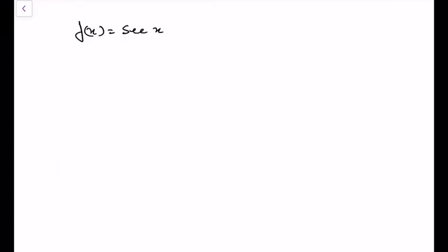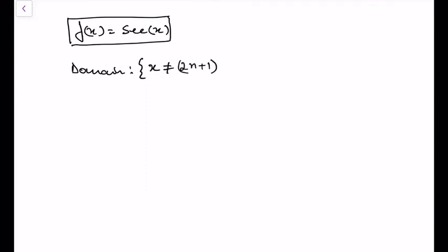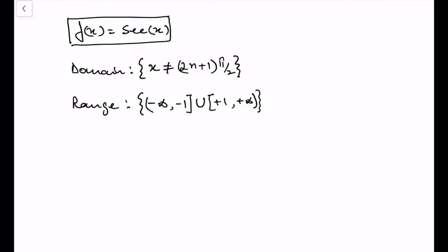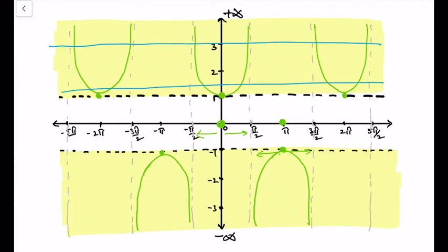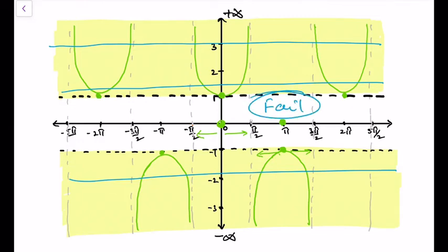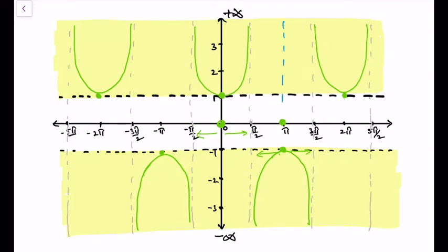So for the function f(x) = sec x, the domain is x ≠ (2n+1)π/2, and the range is from minus infinity to −1 and then from +1 to plus infinity. For this function to have an inverse, f(x) = sec x must pass the horizontal line test. The horizontal line intersects at more than one point, so this function will not pass the horizontal line test until we reduce the domain.